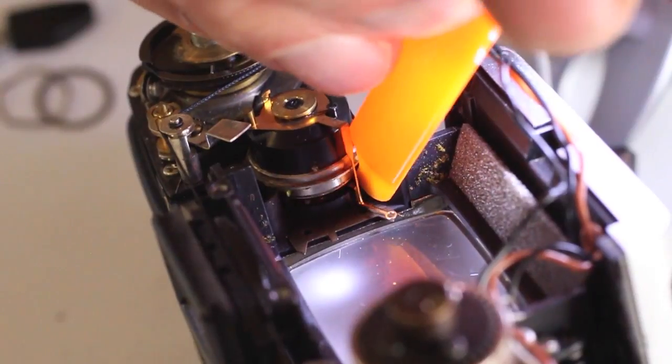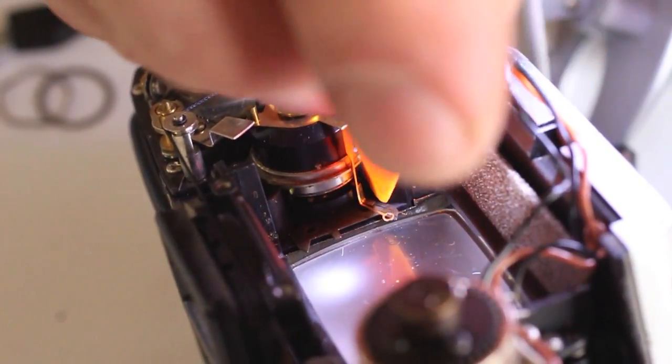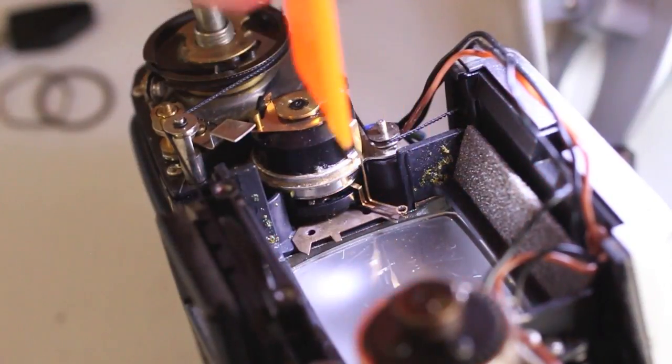These minute pieces of foam degrade in the same manner as the light seals in an old camera and need to be removed.